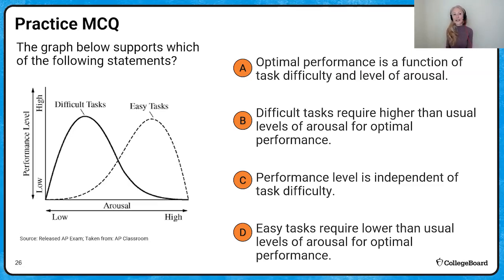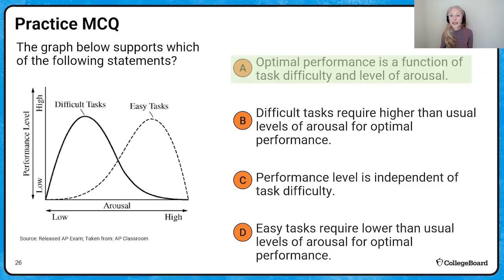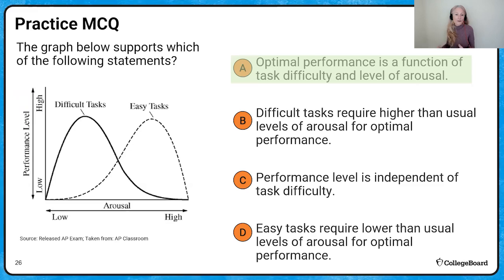One more practice multiple choice question on Yerkes-Dodson: optimal performance requires some moderate level of arousal, but that moderate level is a function of two things — how difficult the task is, because if it's a difficult task you need a lower level of arousal — and arousal levels themselves. Performance is impacted by both task difficulty and arousal levels.